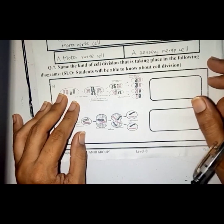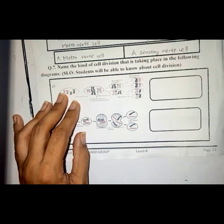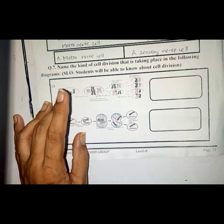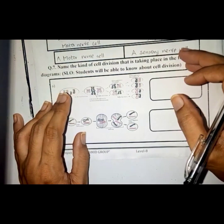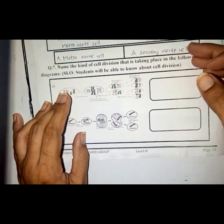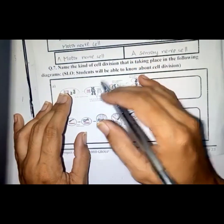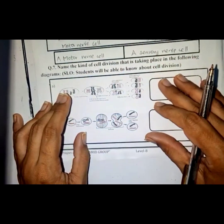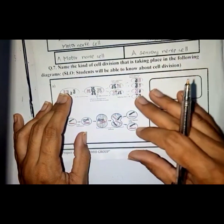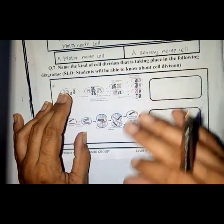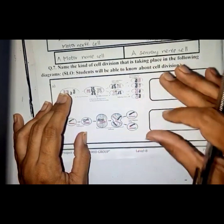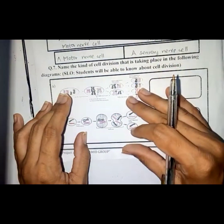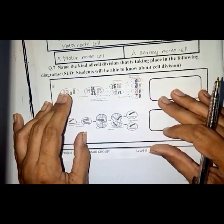The page number that we are going to solve today is 23. So students, at this page we have to find the reason on the basis of which we have to label the parts which are shown here.